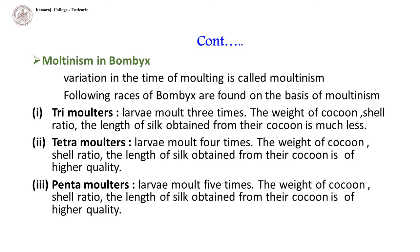Moltinism in Bombyx: the larval stages are called instars. They molt several times to attain pupa. Variation in the time of molting is called moltinism. Molting is the process when silkworms cease feeding, become immobile, and prepare themselves for shedding their old skin to accommodate their fast growth. Four molts take place during the entire larval period.